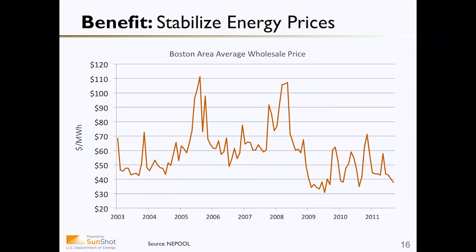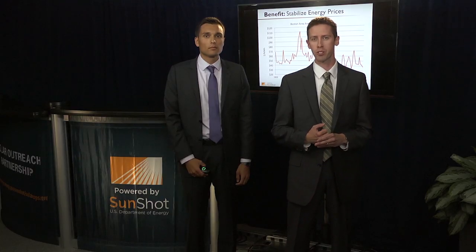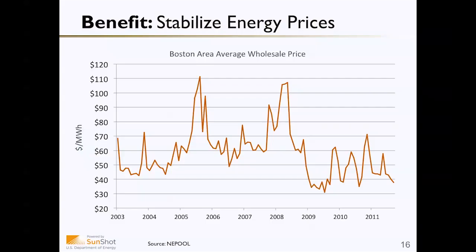Another benefit that solar provides is stabilizing energy prices. As you can see from this chart, energy prices can fluctuate dramatically day to day and season to season. Solar provides a consistent and known price of energy for the life of the system, thus stabilizing these peaks and making energy prices less variable.